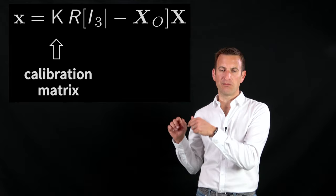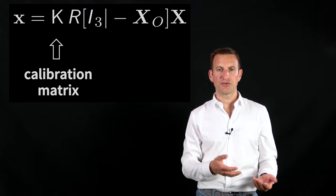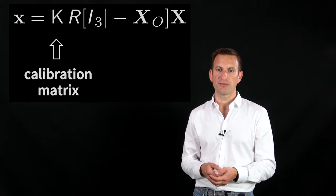x0 is the location of our projection center and this block in the end is a projection matrix because we are mapping a point from the 3D world onto the 2D image plane. Uppercase X is an arbitrary point in the 3D world.